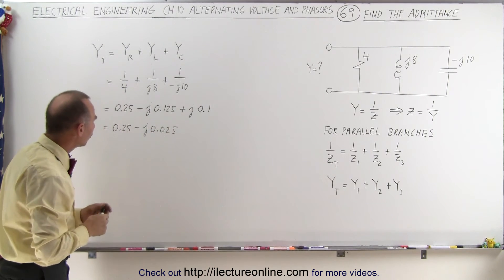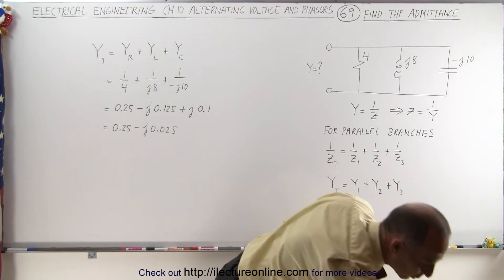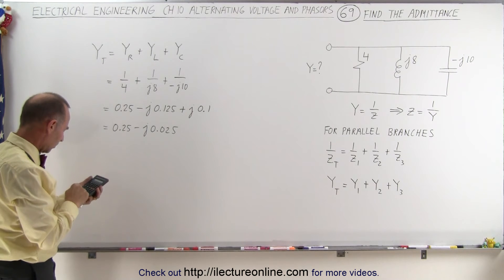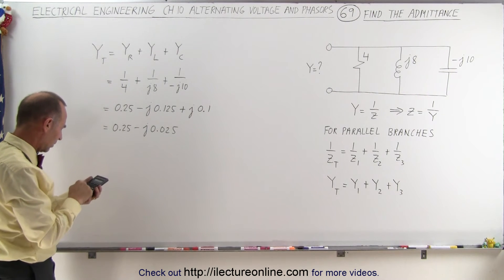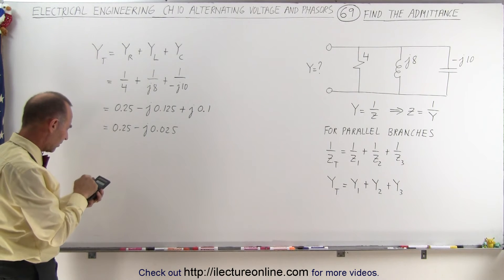And then if we want to write that into its magnitude and phase angle format, we can do the following. We can say, well, that's equal to 0.25 squared plus 0.025 squared is equal to that, divided by that,